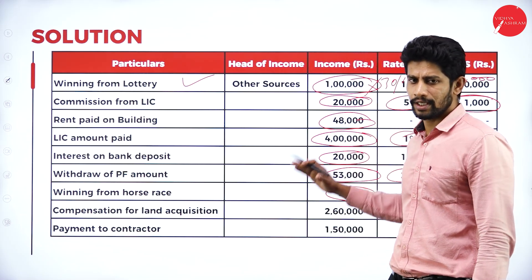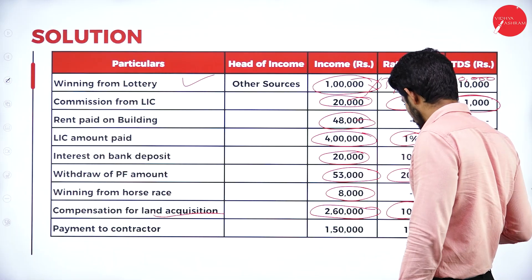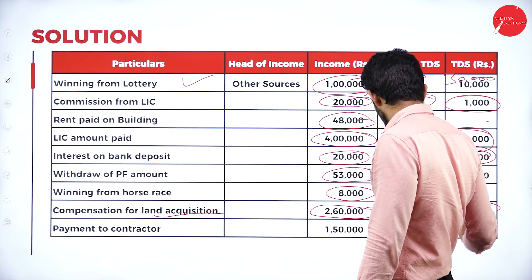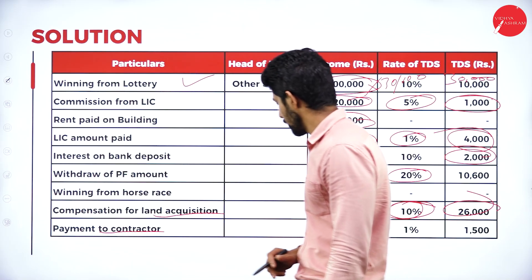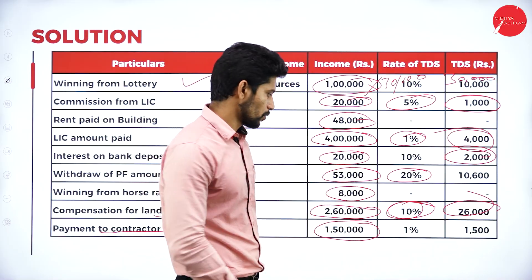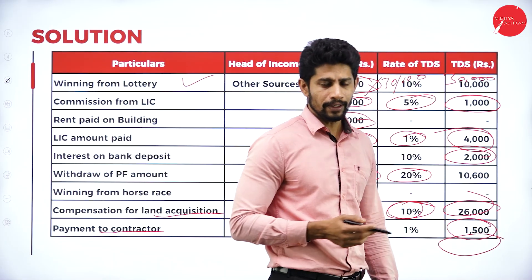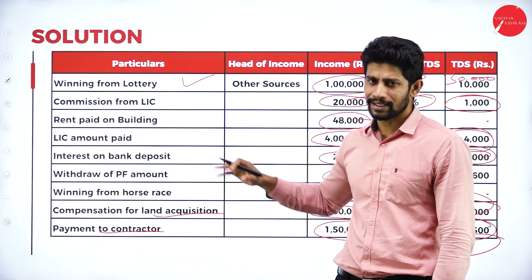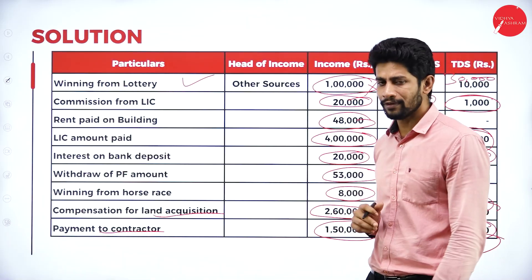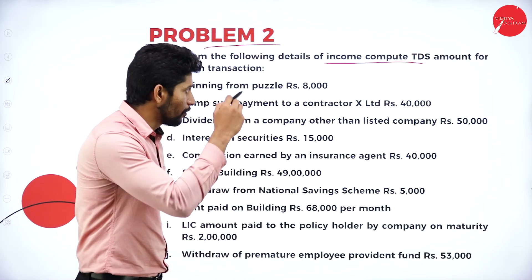Compensation for land acquisition is 2 lakh 60,000 rupees — more than the 2,50,000 exemption limit, so 10 percent applies: 26,000 rupees TDS. Payment to an individual contractor whose total payment during the financial year is 1,50,000 rupees — one percent for an individual contractor: 1,500 rupees TDS. Total all these amounts to get the total TDS payable. The key is to remember the exemption limits and the applicable rates for different types of income.